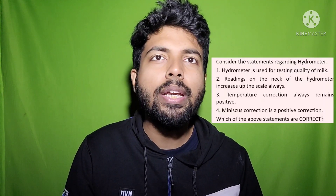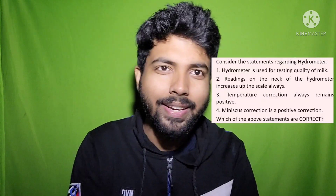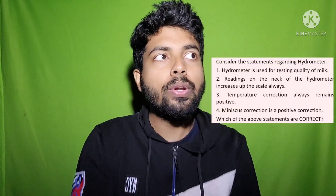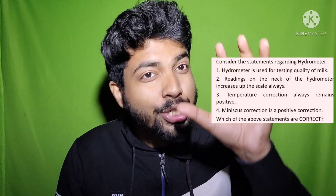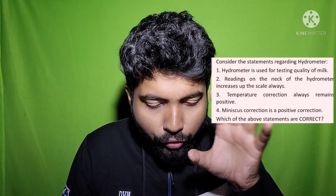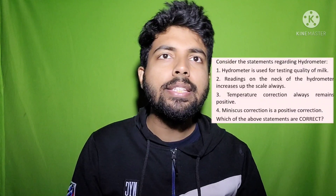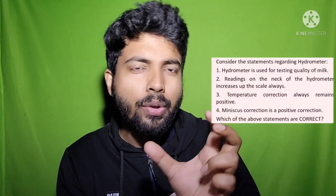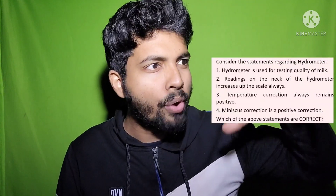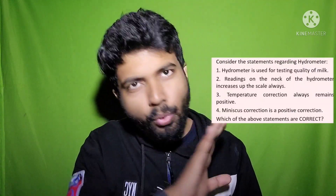After that, suppose it comes: readings on the neck of the hydrometer increases up the scale always. The answer is actually decreases up the scale. So whenever there is a chance of opposing things — increase — then definitely consider decrease as the chance. Just focus on that particular portion: it may be sometimes increase, so decrease also. And also in some cases, like the third statement: temperature correction always remains positive. If there is a very obvious statement that says it is always positive, it can never ever be otherwise — take that with a pinch of salt. In most cases, in 70% of the cases, those statements are found to be wrong.